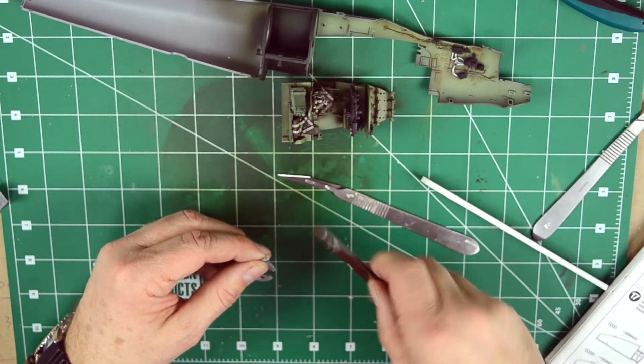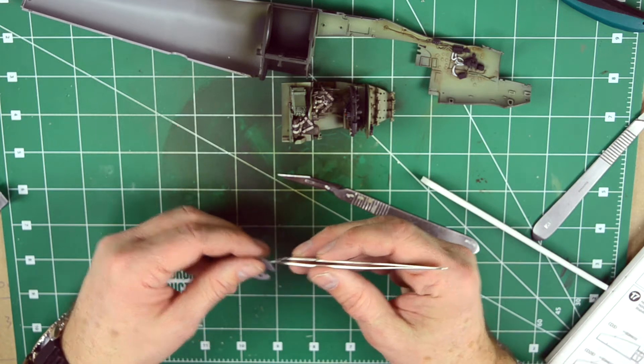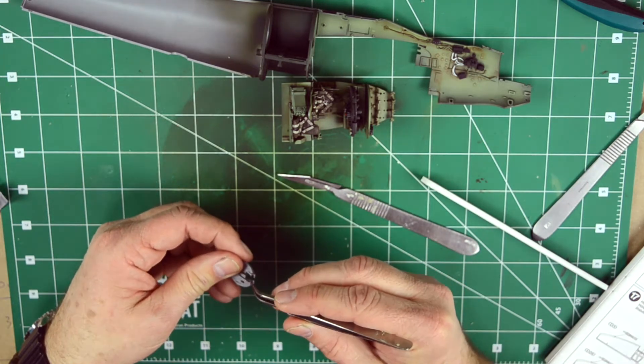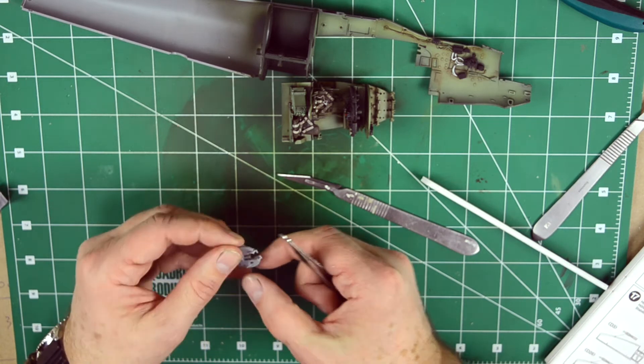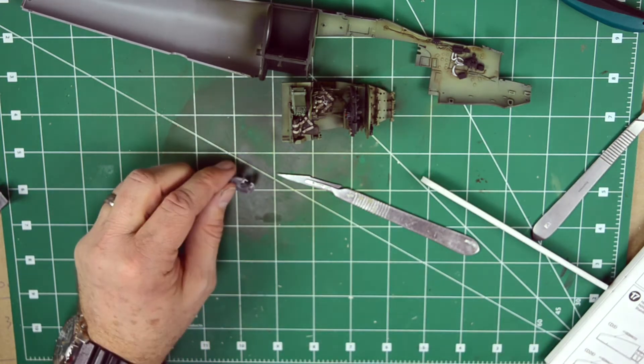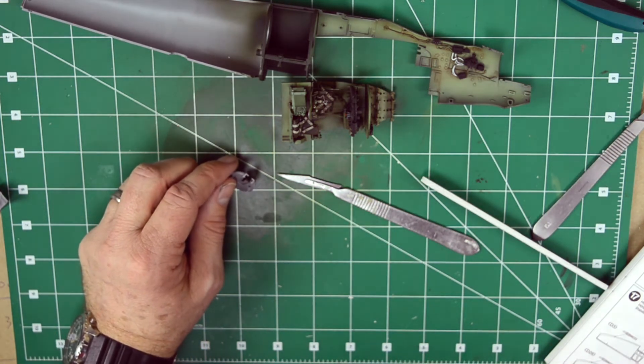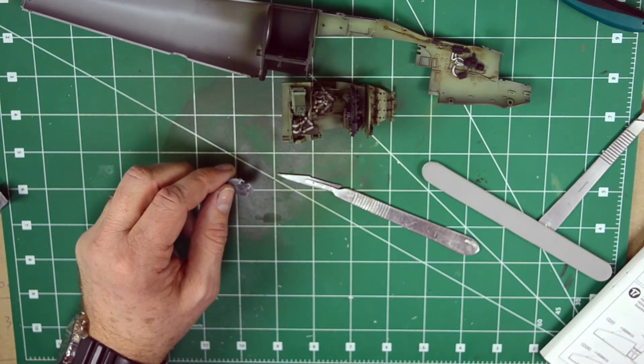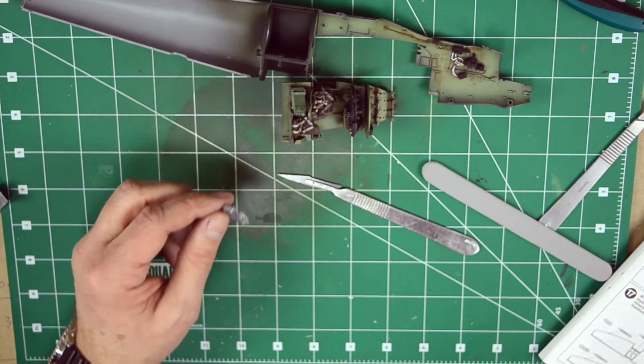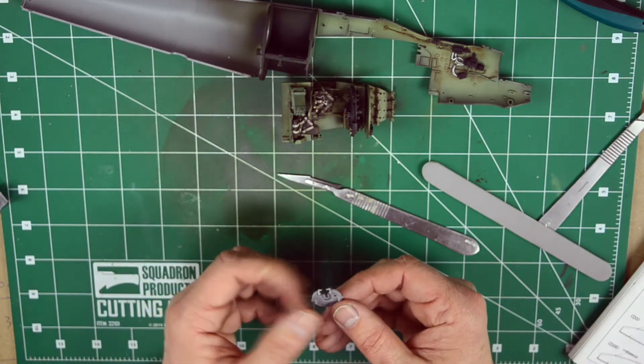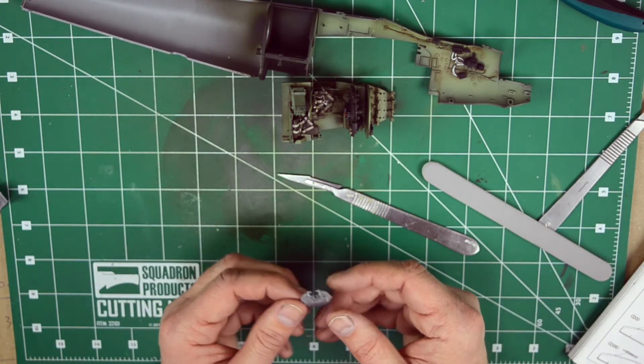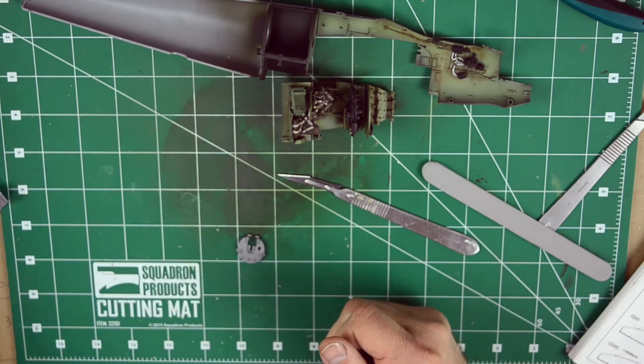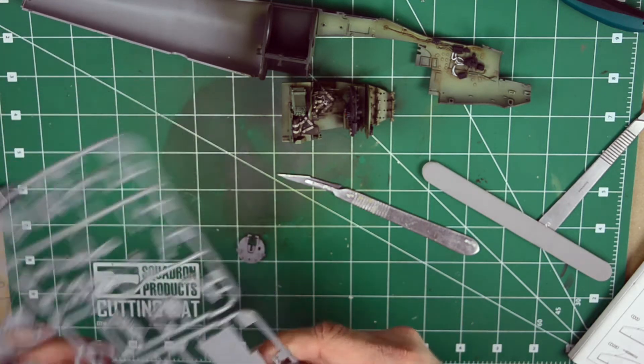In order to do that, looking at the instruction sheet, you basically have to prepare at least the sprues that you need for the assembly. As I mentioned before, the Mosquito consists of 25 sprues and that is a whole lot to put on your table. Good advice is that when you study the instruction sheet first and then just prepare the sprues that you need during the section you are working on.